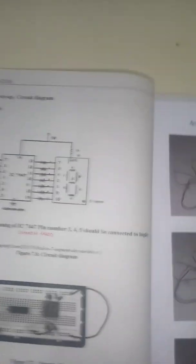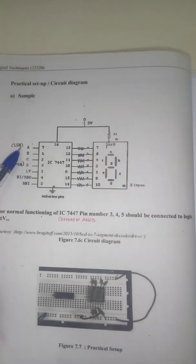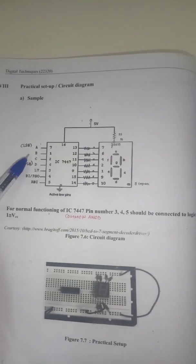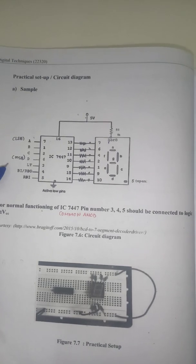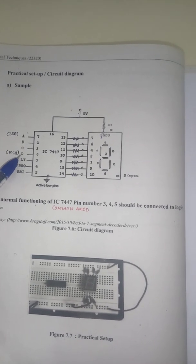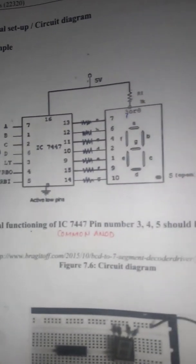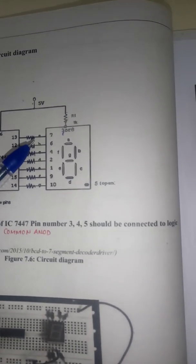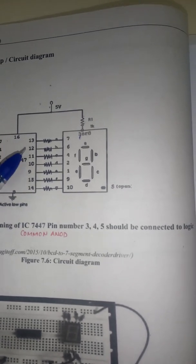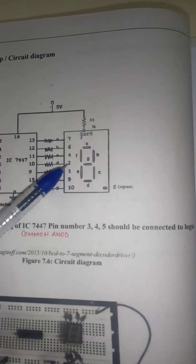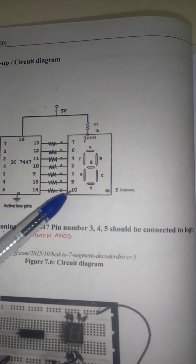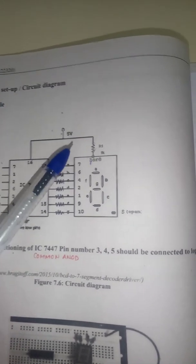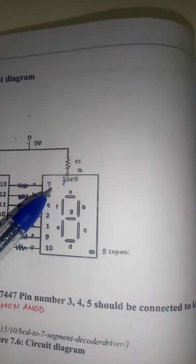This is the diagram for our practical session. Here we have connected IC7447, the BCD to 7-segment decoder IC, to the 7-segment display. The inputs ABCD are connected — pin number 7 is LSB and pin number 6 is MSB, so these 4 are the inputs. The output connections from pins 9 to 14 are connected to the 7-segment display: pin 13 to segment 7, 12 to 6, 11 to 4, 10 to 2, 9 to 1, 15 to 9, and 14 to 10. Pin 16 is connected to +5V for IC supply and also to pin 3 of the 7-segment display for its supply.